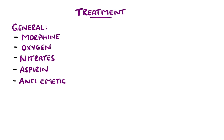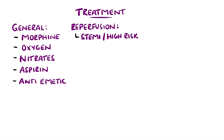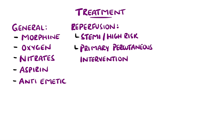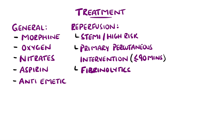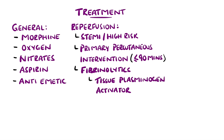Patients with STEMI undergo reperfusion therapy as early as possible if the onset of chest pain was within 12 hours. High-risk non-ST elevation acute coronary syndrome patients should also be considered. Primary percutaneous coronary intervention, which involves inserting a balloon and stent into the clogged coronary artery to reintroduce blood flow, is preferred if it can be performed within 90 minutes of medical contact, while fibrinolytic therapy is preferred if this is not feasible. This involves the use of tissue plasminogen activators like alteplase, tenecteplase, or reteplase.